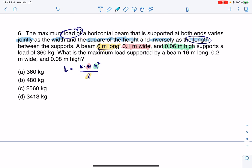Last but not least, it says it supports a load of 360 kilograms, so I'm going to put that there, and that's going to allow me to solve for k. So let's go put all of those in. I would have 360 equals k times 0.1 times 0.06 squared, and I would divide that by 6.